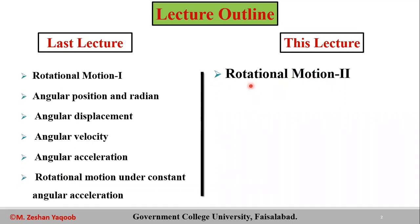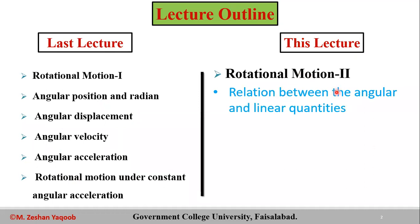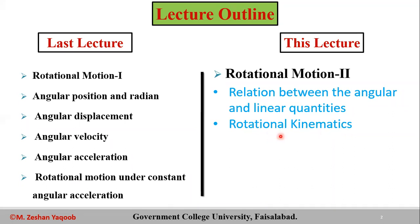In part two, we have defined the basic variables and learned about the angular and linear quantities. Now we are able to understand the relation between angular and linear quantities — how they can be connected and developed. We will talk about the rotational kinematics and how it describes the motion of rotation.